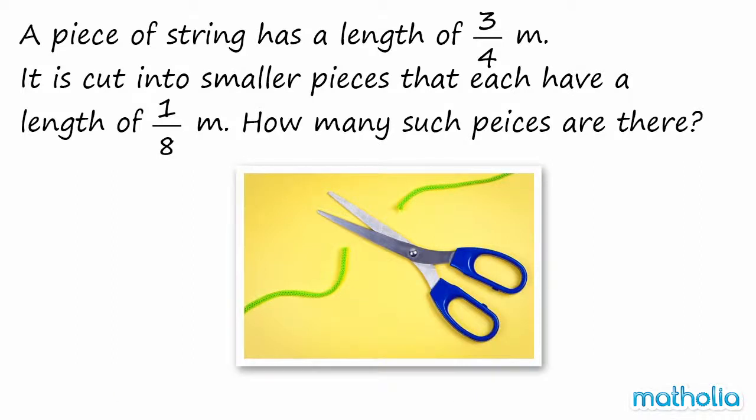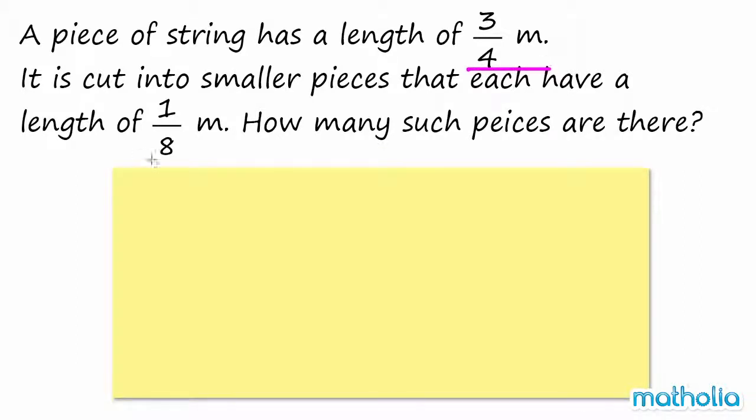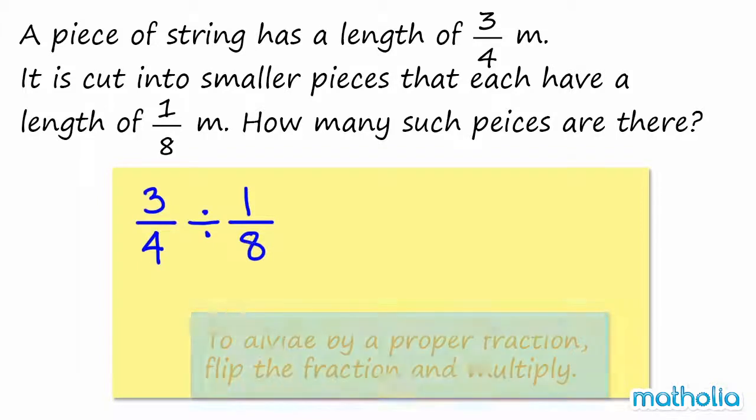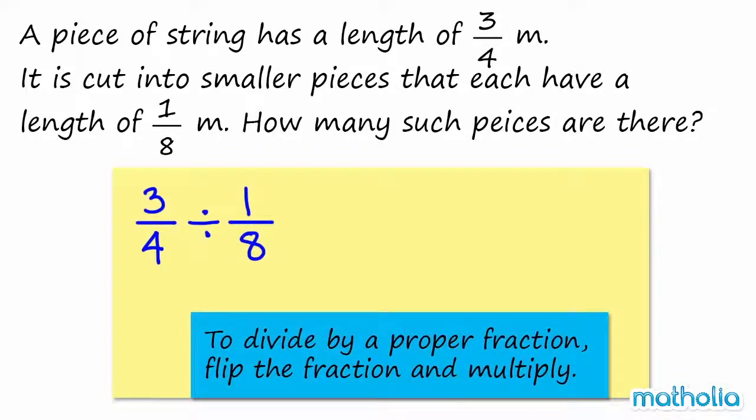To find the number of pieces, we need to divide 3 quarters by 1 eighth. Recall that to divide by a proper fraction, we flip the fraction and multiply.